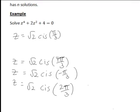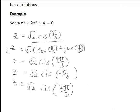If preferred, we can rewrite these in Cartesian form. For example, the first solution √2 · cis(π/3) = √2·(cos(π/3) + j·sin(π/3)) = √2·(1/2) + j·√2·(√3/2) = √2/2 + j·√6/2. Similar conversions can be done for the other solutions. This is an example of how we solve a complex equation of this form.